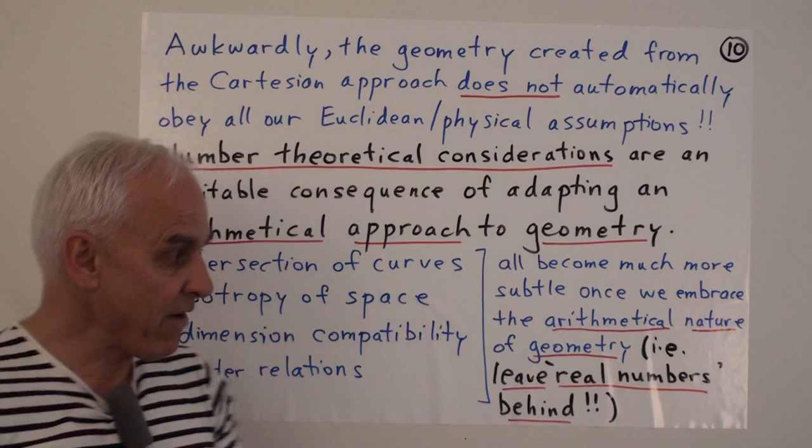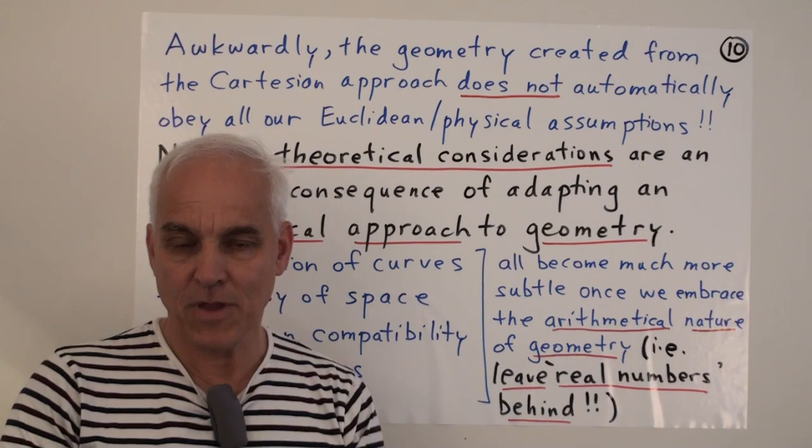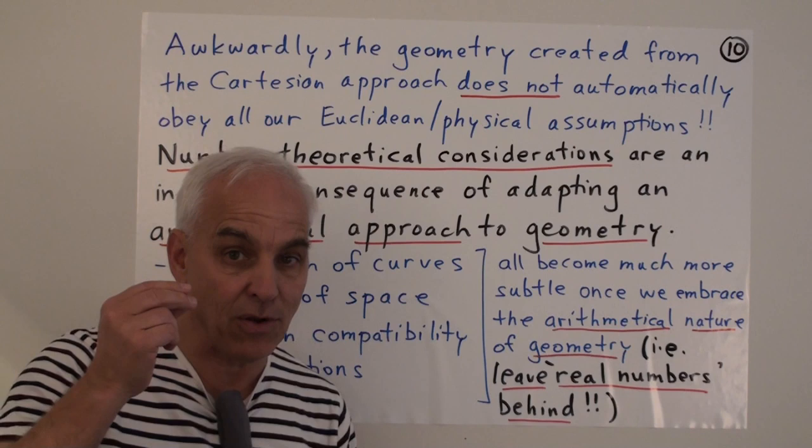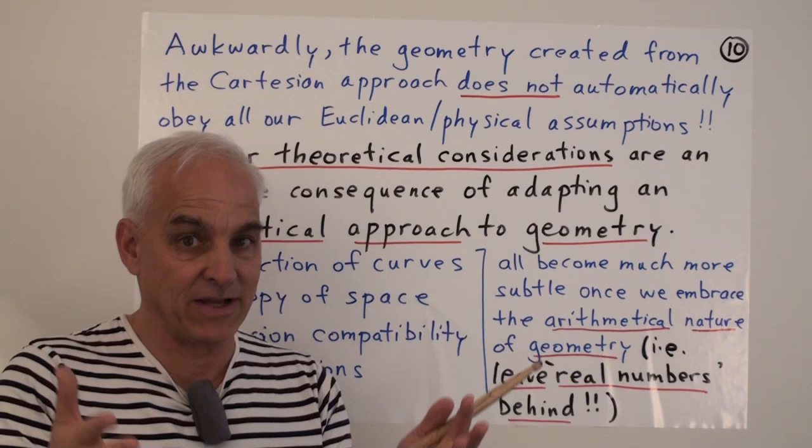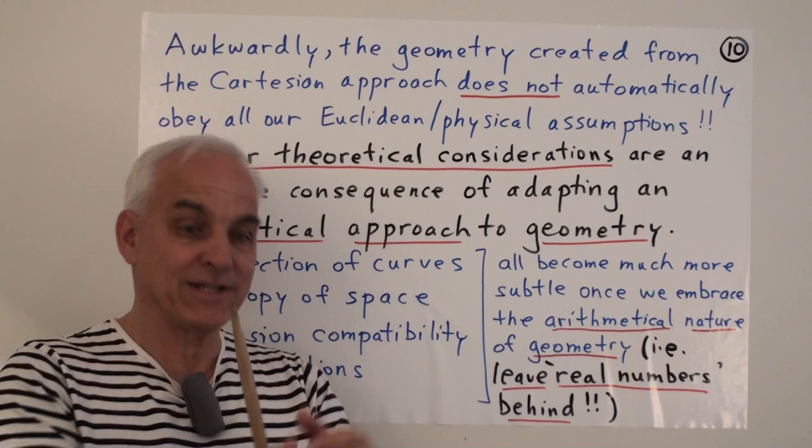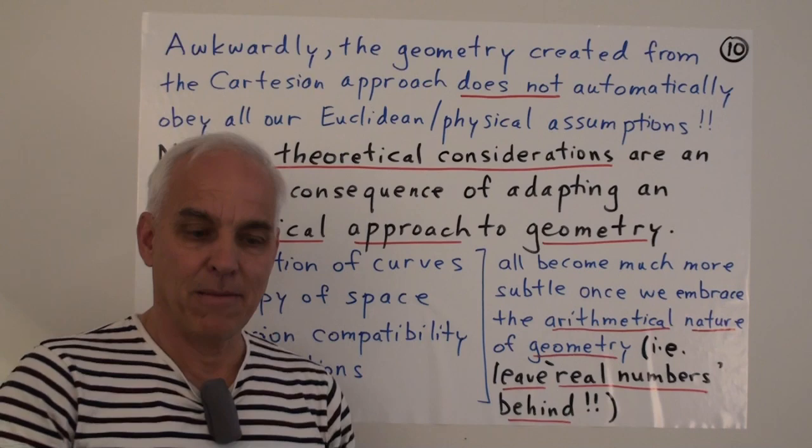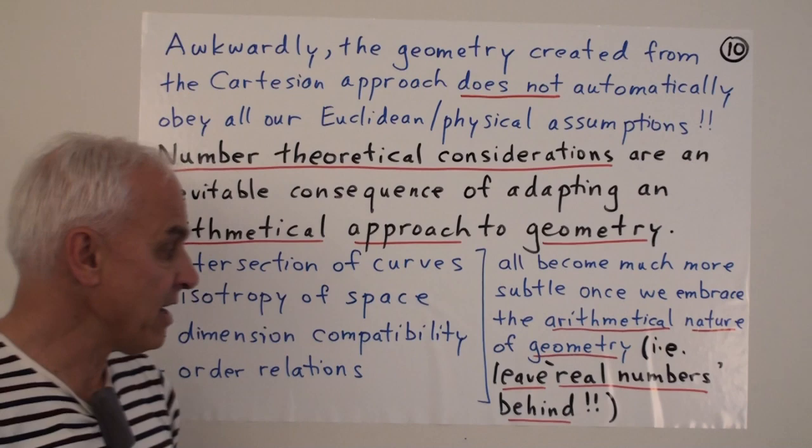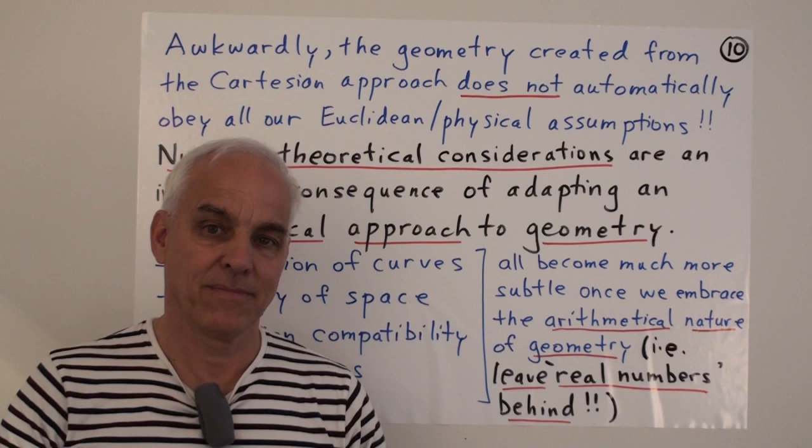However, when we let go of the real number dream, then these statements are no longer so obvious. In fact, they are not necessarily true anymore. Whether or not two curves intersect one another is not just a physical or intuitive visual thing that you can easily see. It's rather something that you can determine by a number theoretical analysis of the relevant equations. So more work is required, more subtlety appears, the story becomes richer. The connections with arithmetic, algebra, and geometry become much more manifold. So it's another consequence, but it's a price that we pay from leaving the real numbers behind. And it's ultimately something of a price that we have to pay for introducing these Cartesian coordinates, which are otherwise very useful and very powerful tool.